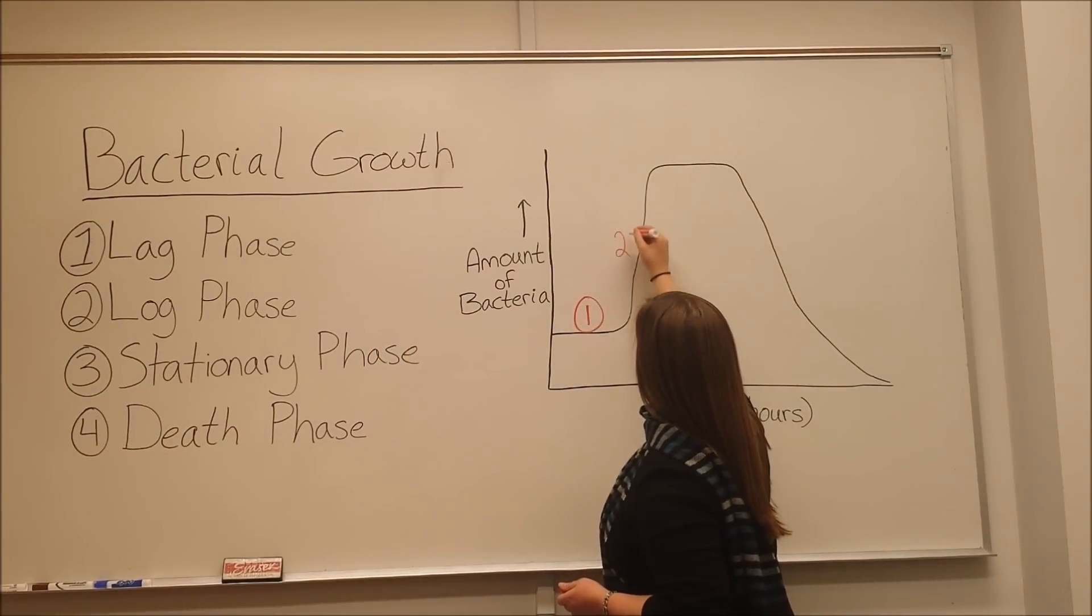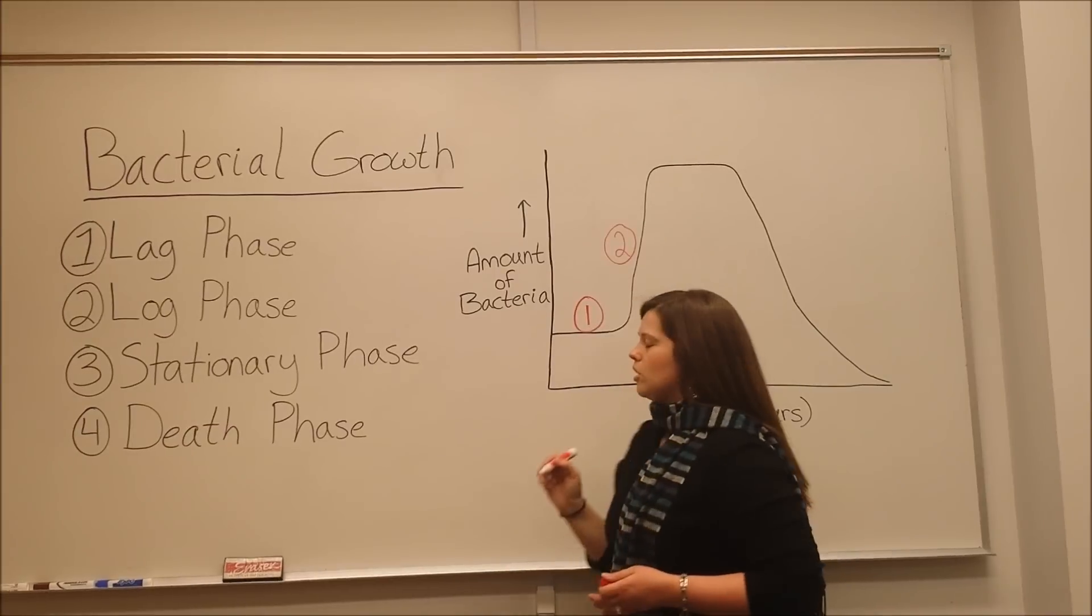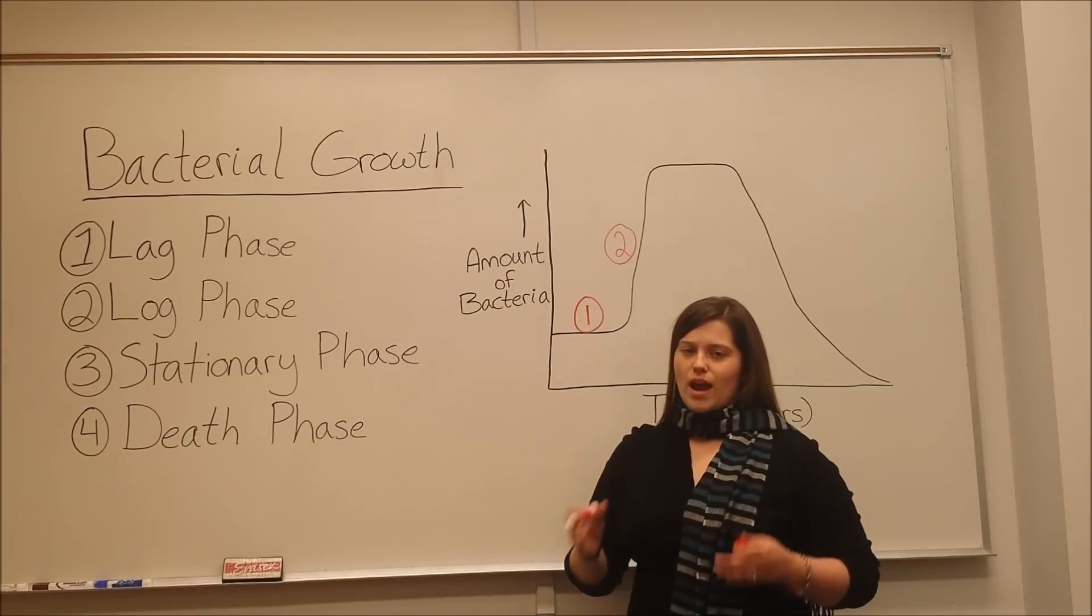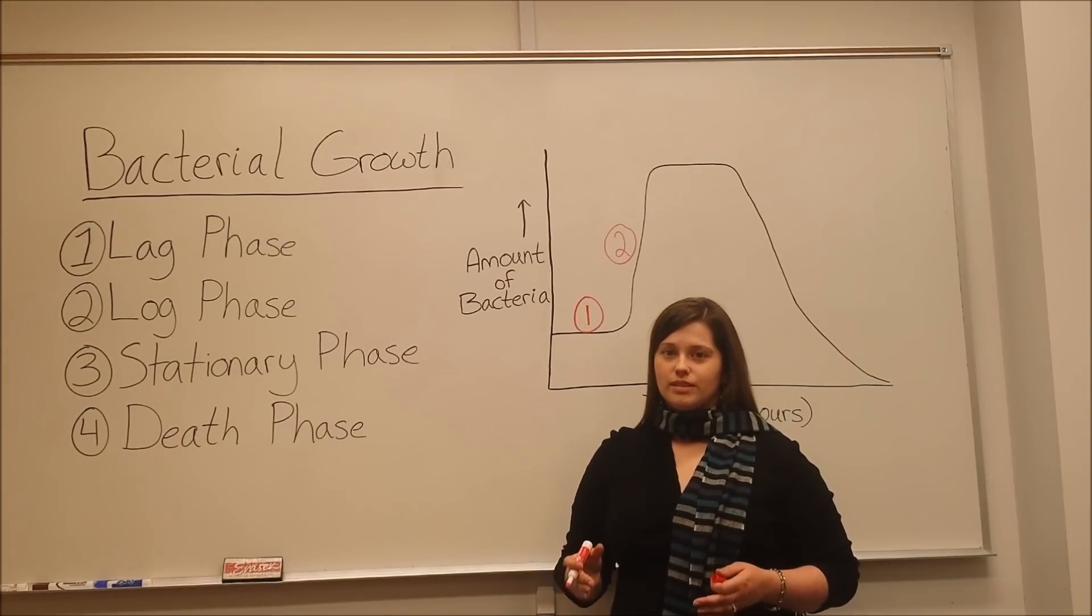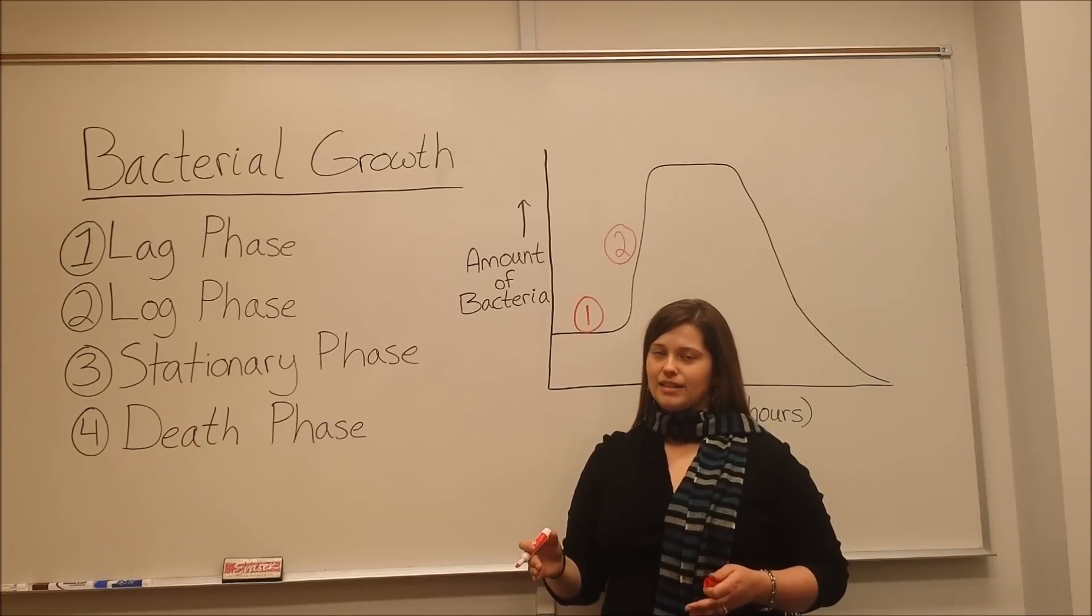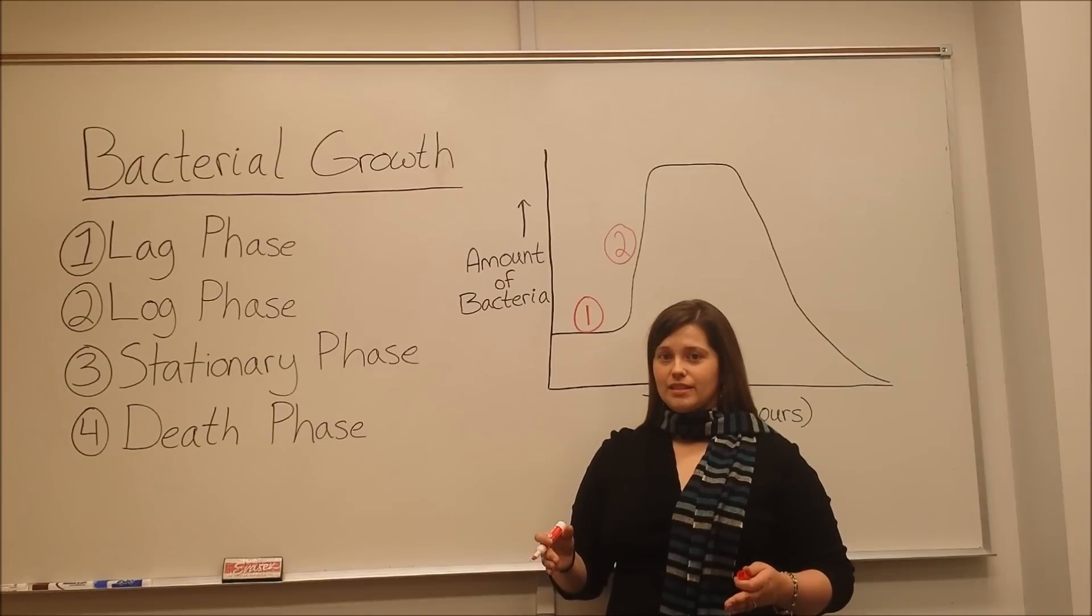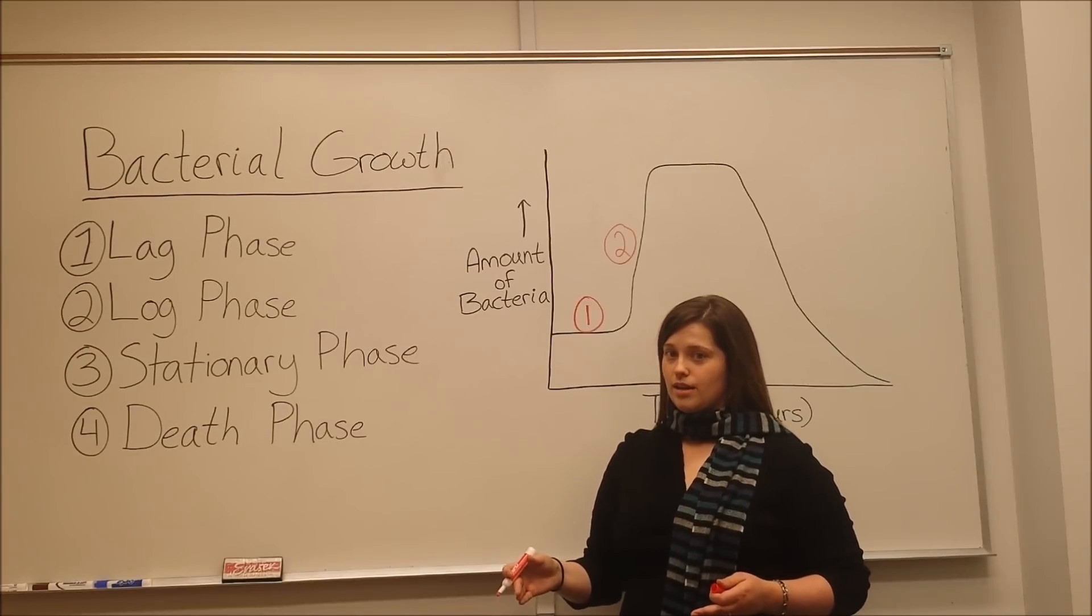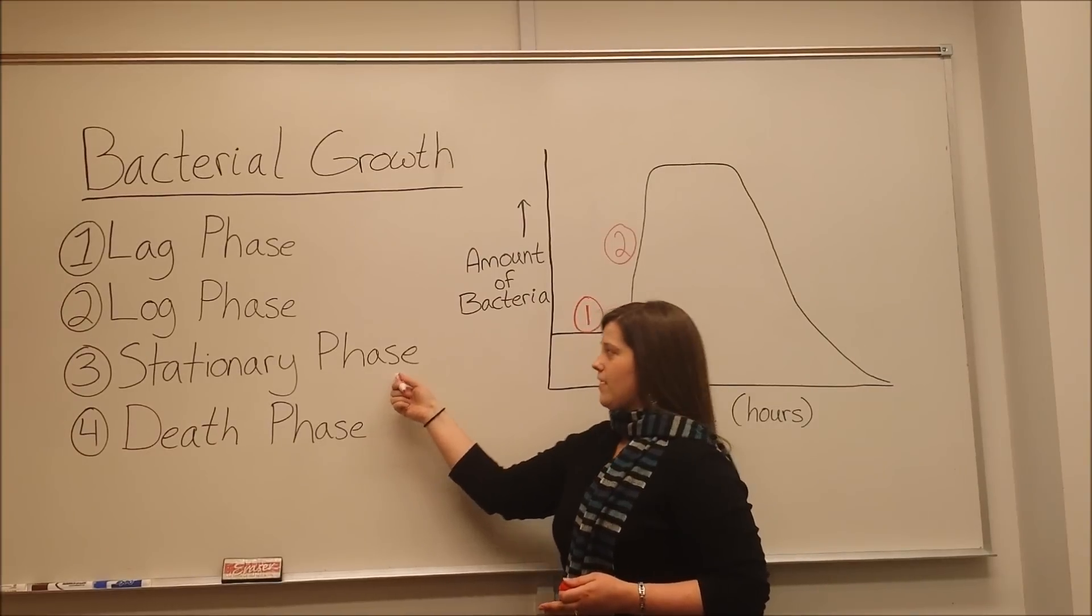Log phase is when there is rapid, exponential cell division. The bacteria are dividing very quickly, but they are using up nutrients and they are secreting waste products. This is what eventually leads to stationary phase.